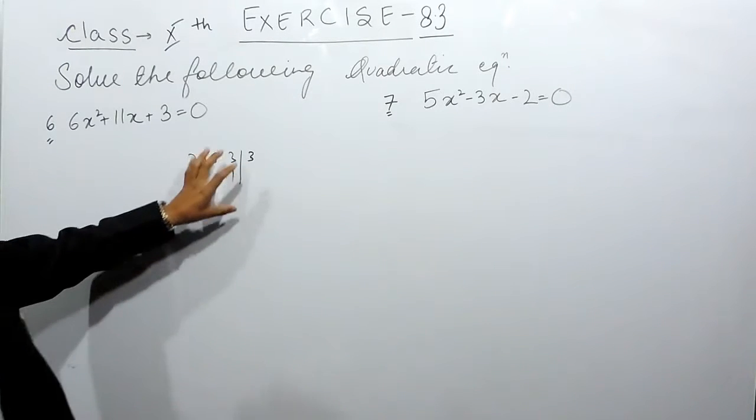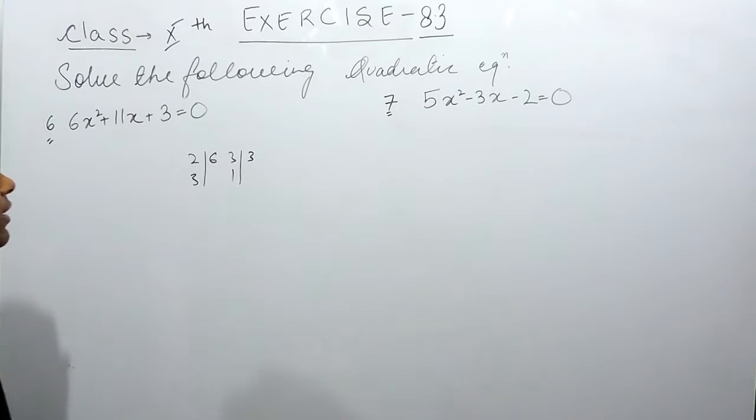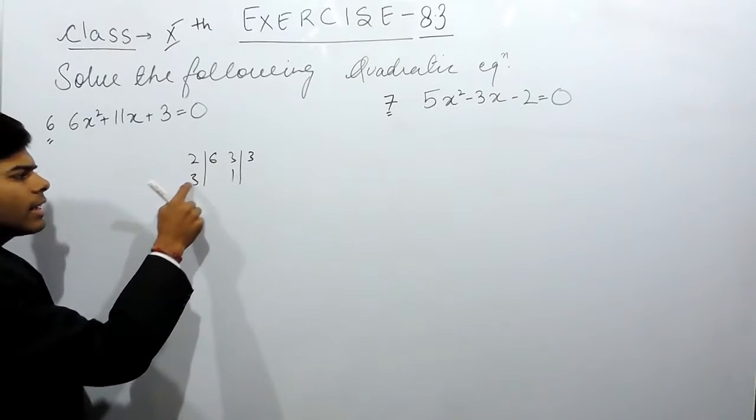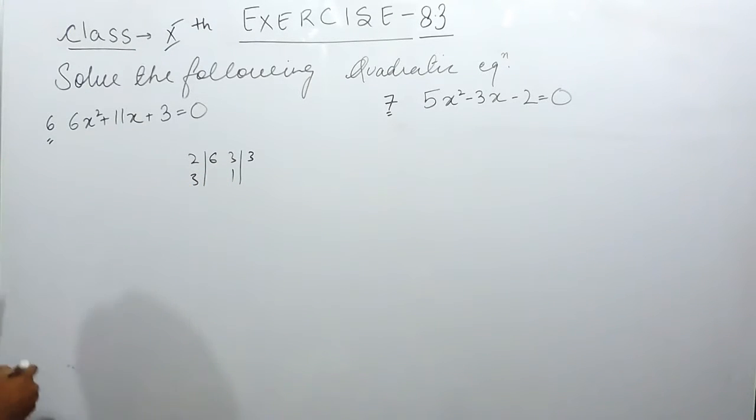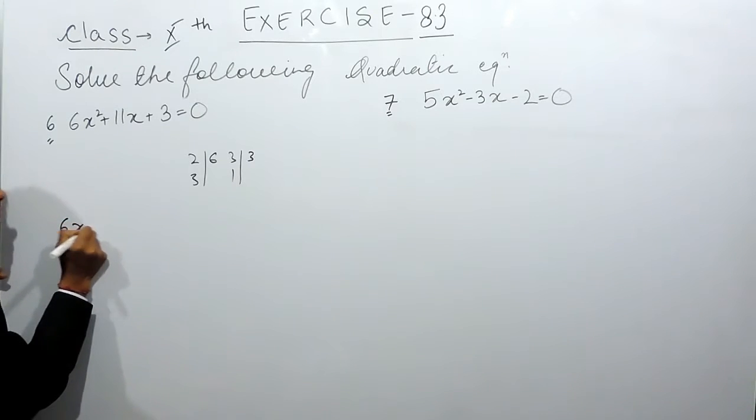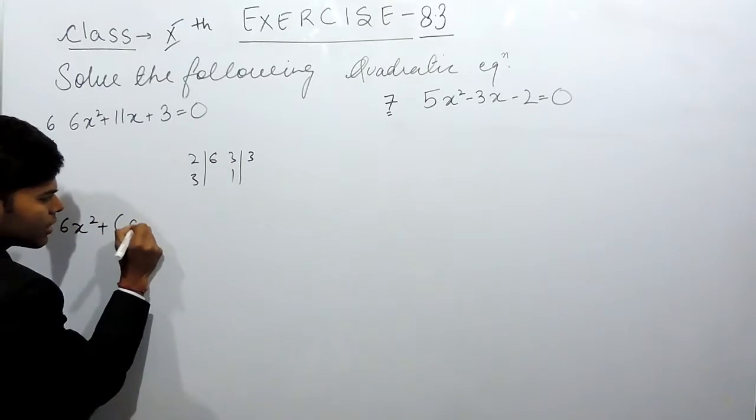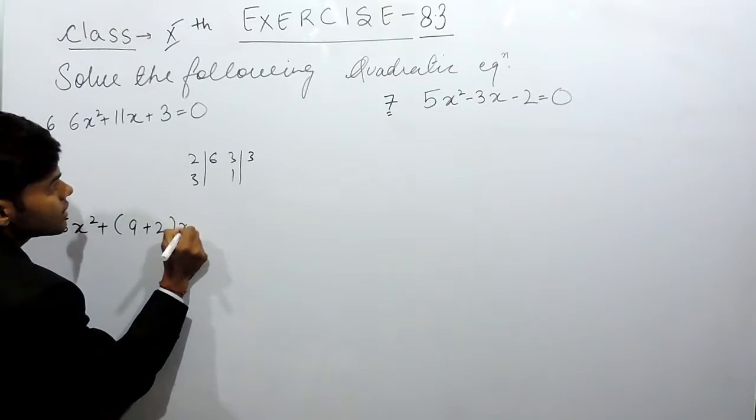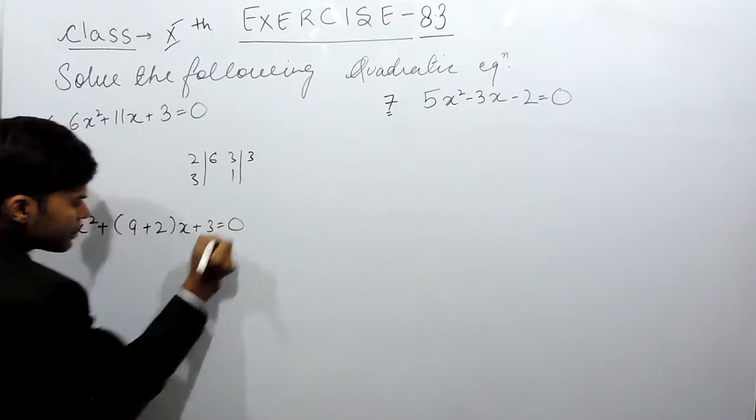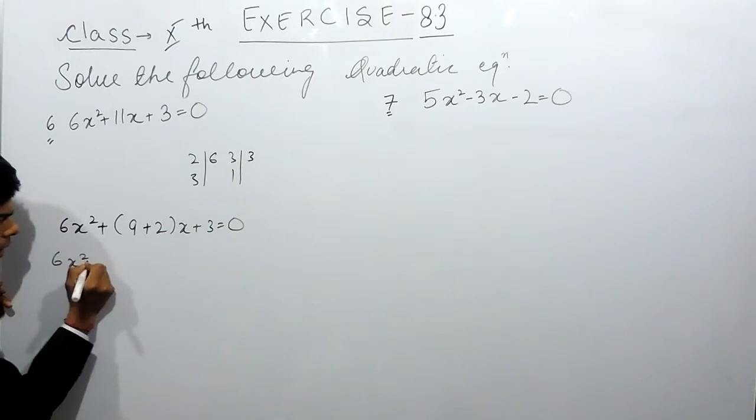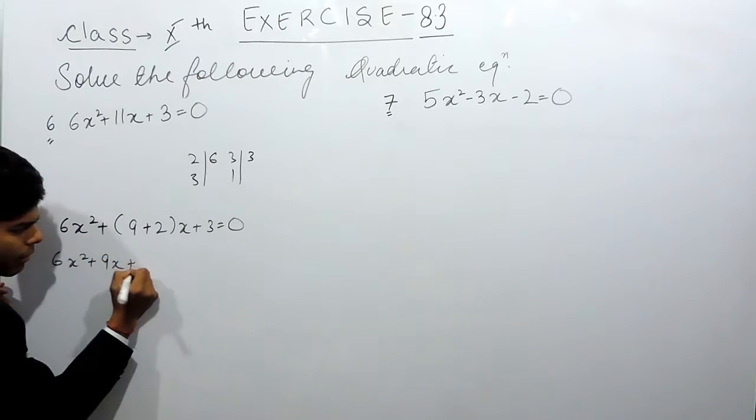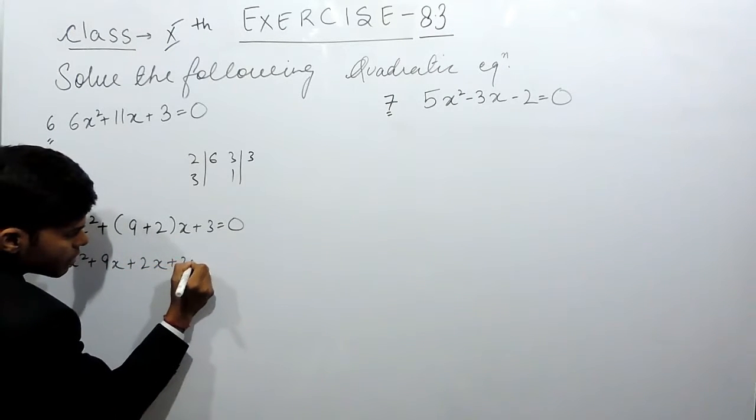Now we have to arrange them in such a manner that we get 11. We can write this like 3 times 3 is 9, and 9 plus 2 is 11. So 6x² + 9x + 2x + 3 = 0.